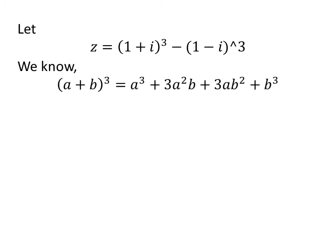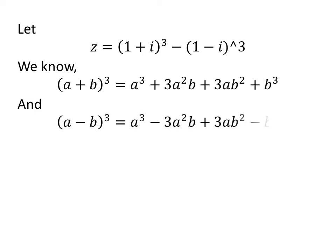We know the identity: cube of (a plus b) is equal to cube of a plus 3 times square of a times b plus 3 times a times square of b plus cube of b. We also know the identity: cube of (a minus b) is equal to cube of a minus 3 times square of a times b plus 3 times a times square of b minus cube of b.